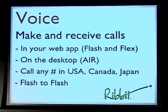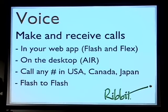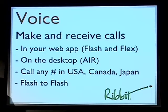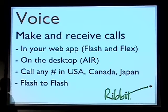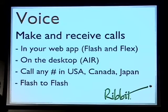Right now the voice platform supports calling. You can receive incoming calls, and you can call out to the US, Canada, and Japan. You can also make flash-to-flash calls, which means if you've got a Ribbit app running on your client side and the person you're calling has it, you can call right to their application. You can call their phone number, or if they're registered with Ribbit as a user, you can just put in their email address and we remap it to talk to them.